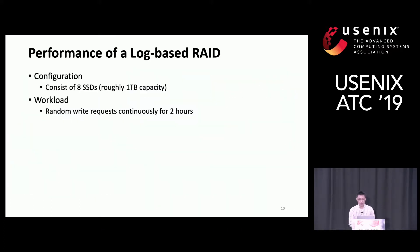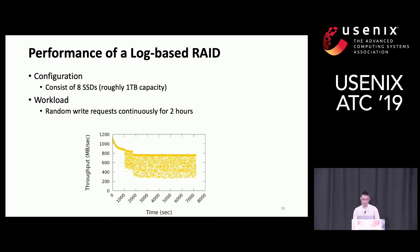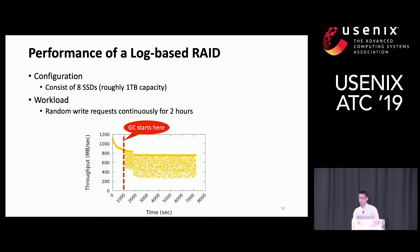We considered the performance of a typical log-based RAID consisting of eight SSDs. For workload, we used random write requests continuously for two hours. We observed that garbage collection starts around 1,000 seconds, and after garbage collection starts, performance fluctuates due to interference between garbage collection IO and user IO.